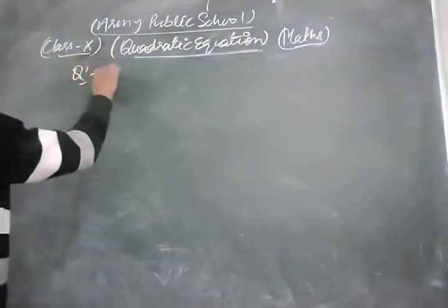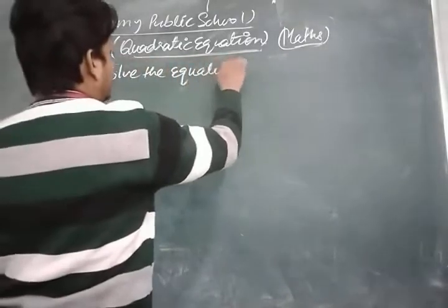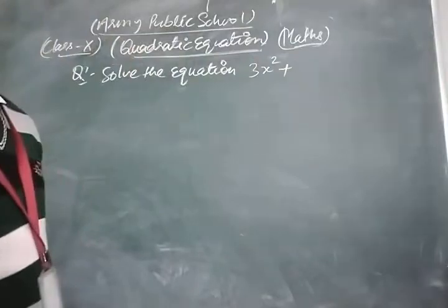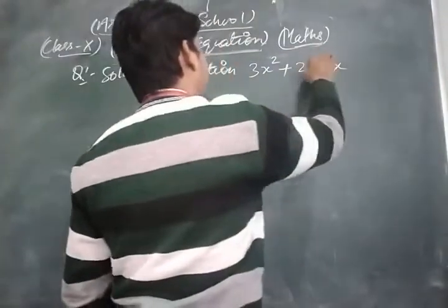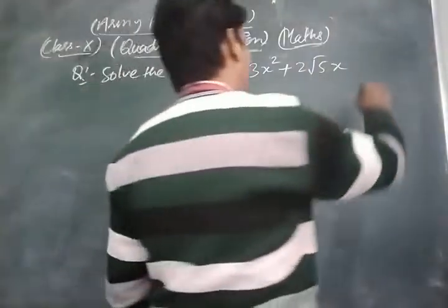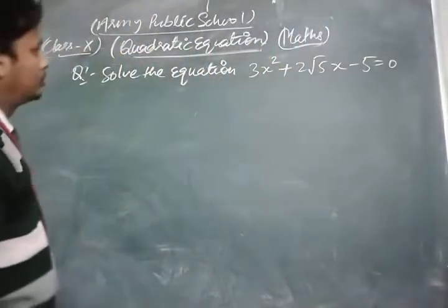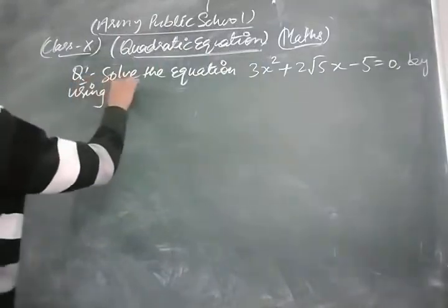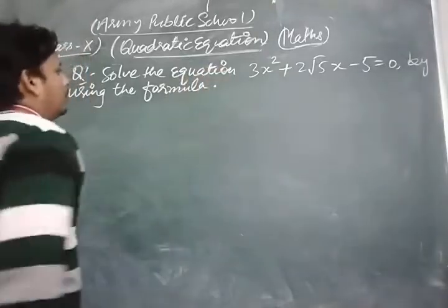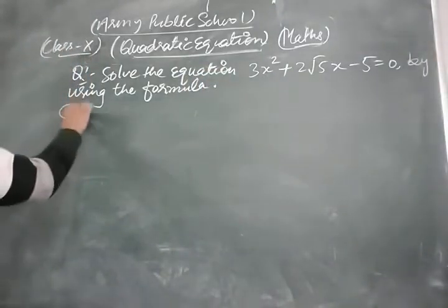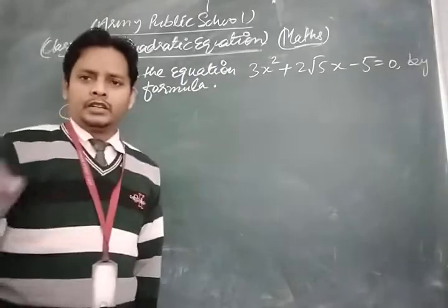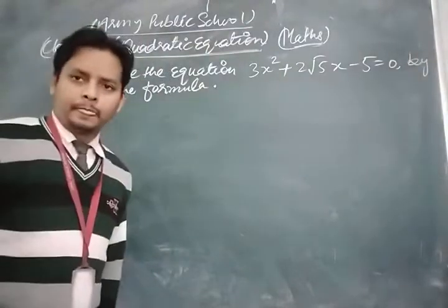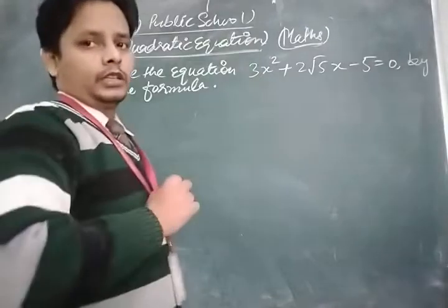Now we take and solve another important question. Solve the equation 3x² + 2√5·x - 5 = 0 by using the formula. Here we solve the given equation by using the formula — we don't factorize it; we just apply the quadratic formula and simplify.